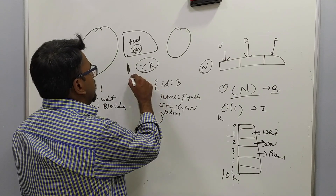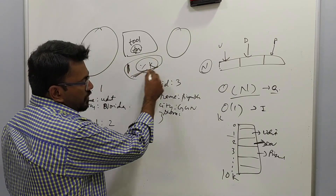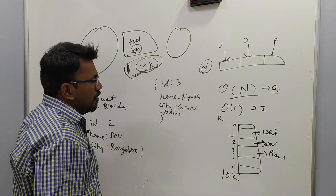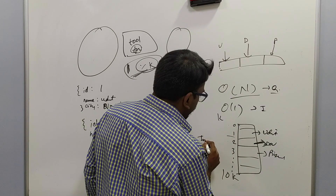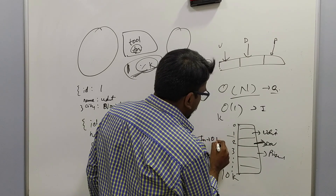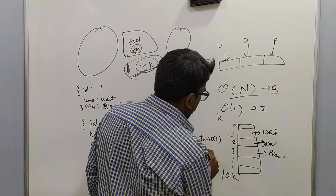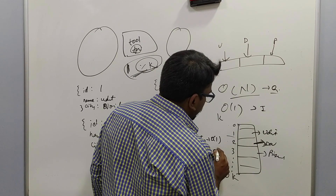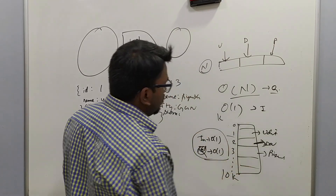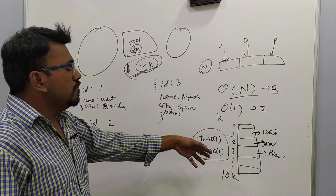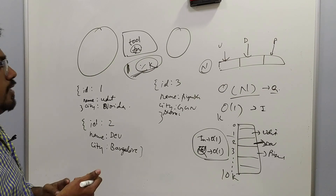What will be the complexity? Let's say the hash function is O(1) since it is just a modular operation. So insertion will be O(1) and querying will also be O(1). This is the best case scenario — you are able to perform both insertion and query in O(1).